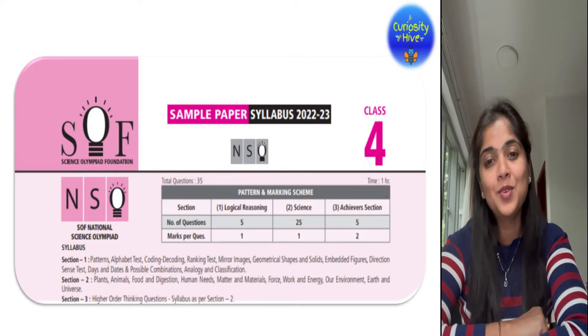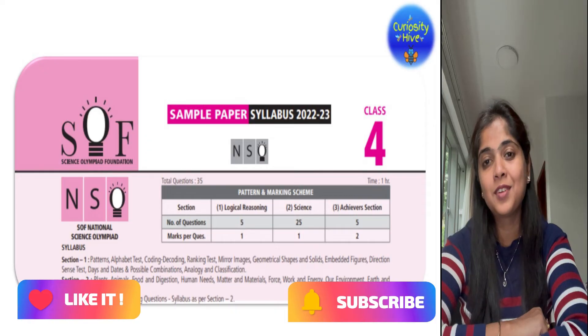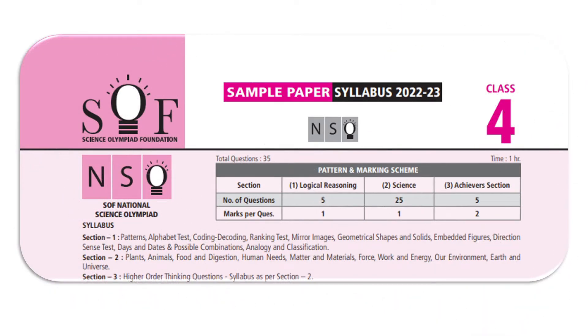But before that, do not forget to like, share and subscribe to Curiosity Hive. So, let us start the NSO paper for class 4. This is for the year 2022-23. It will have 5 logical reasoning questions, 25 science questions and 5 achievers questions in the main paper. In this sample paper, we will just go through 10 questions.